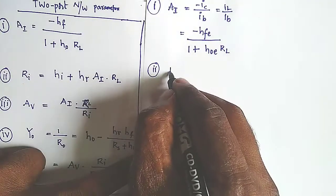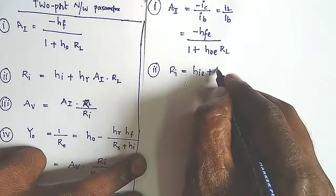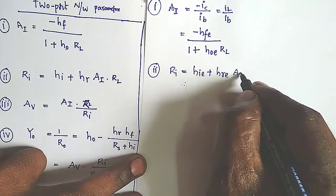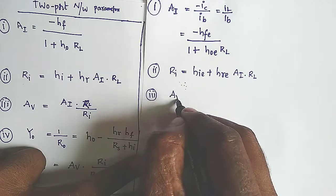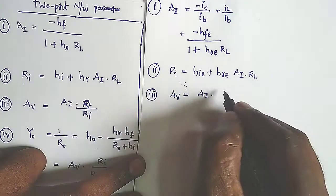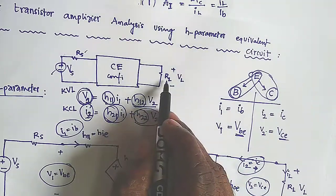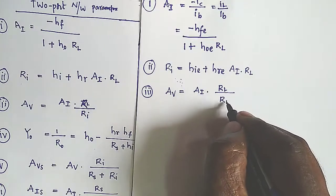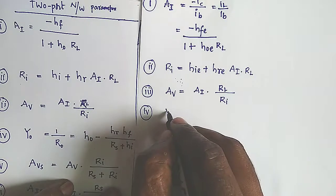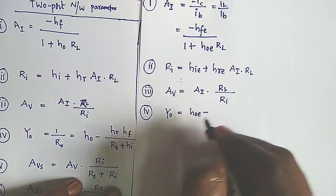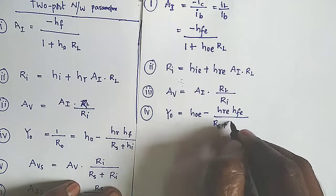The input impedance RI = HIE + HRE·AI·RL. The voltage gain AV = AI·RL / RI, where RL is the load resistance at the end of the amplifier. The output admittance Y0 = HOE − (HRE·HFE) / (RS + HIE).